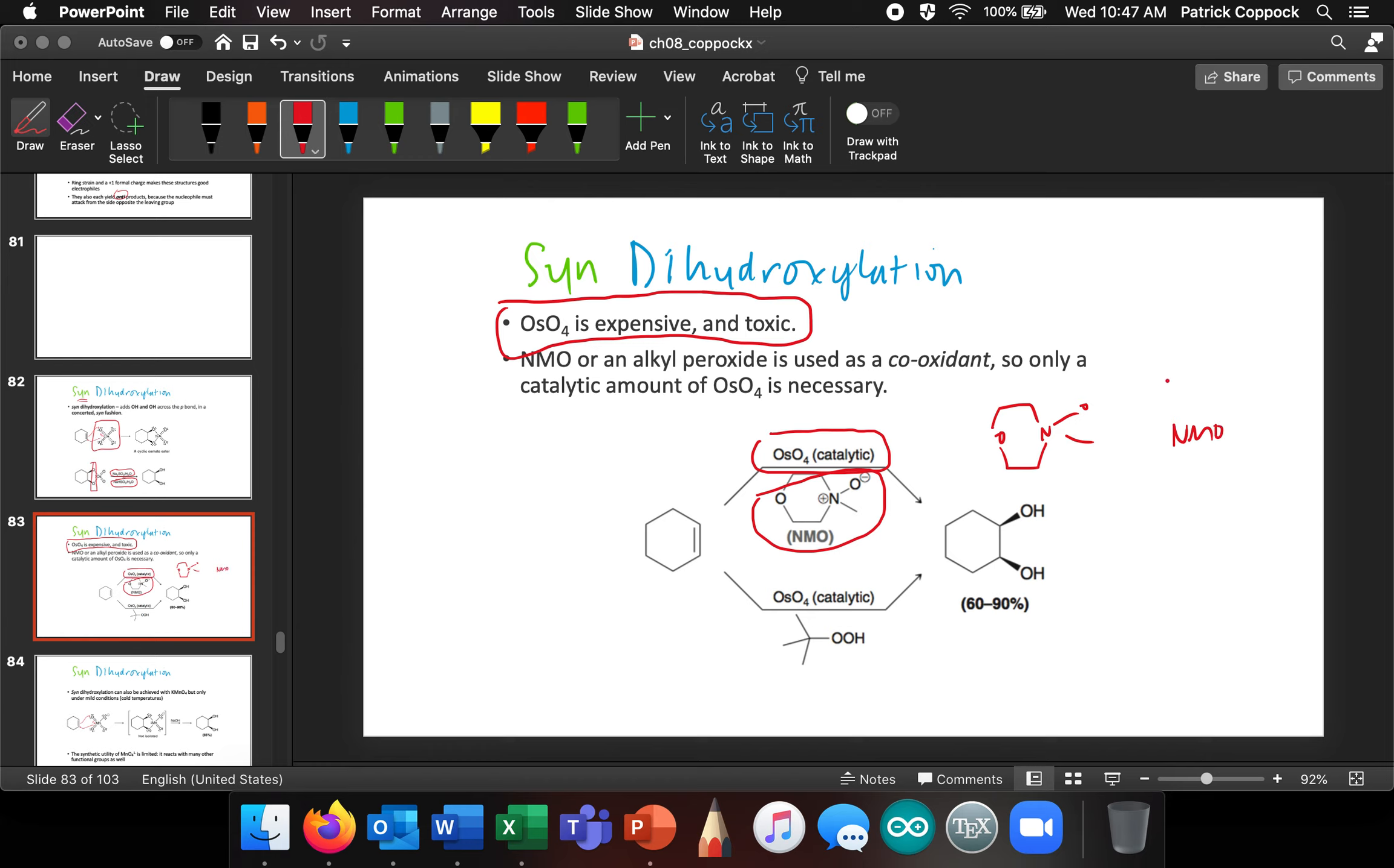Or NMO in OsO4, you would need to know osmium tetroxide. You would need to know what those were, but I wouldn't ask you to draw out the structure of NMO.